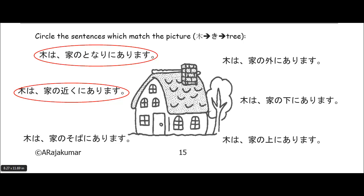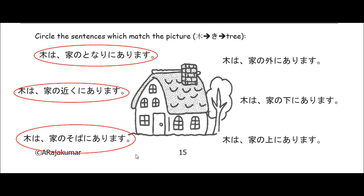Let's have a look at this one. Ki wa, as for the tree, ie no soba. Soba means next to, so next to of the house. Ni — that's your location particle, that's where it's at. You have to have the location particle if you're going to use arimasu. It exists at next to of the house — in other words, the tree is next to the house, and that also is in fact true, tadashii. That one's circled as well.